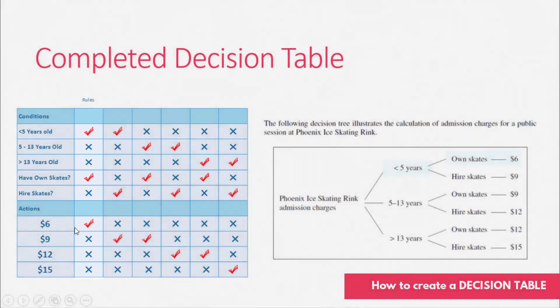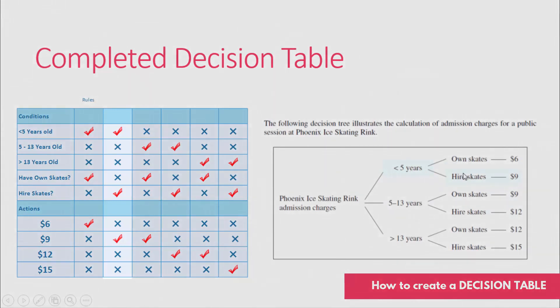You can see that here in this table. If we're under five years old but you have to hire skates, then you are paying nine dollars. You just work your way through — you will have to go through and list every possible scenario that could be considered in that decision table.